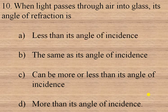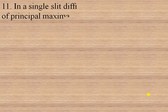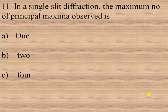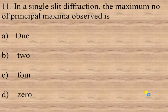The next question is: in a single slit diffraction, the maximum number of principal maxima observed is — 1, 2, 4, or 0? For a single slit there is only one principal maxima. So option 1 is the right option.